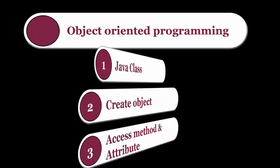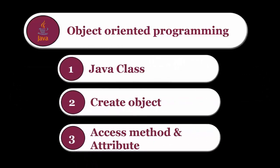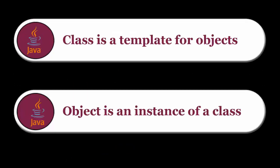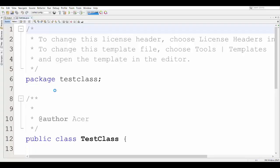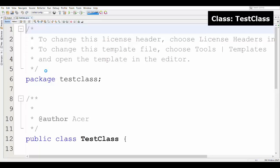This video is about object-oriented programming. Within the video you can learn about classes and objects. A class is a template for objects, and an object is an instance of a class. This is the basic definition of classes and objects. This video will demonstrate classes and objects with Java source code.